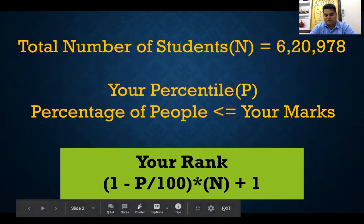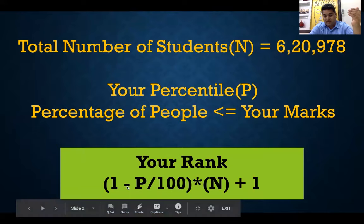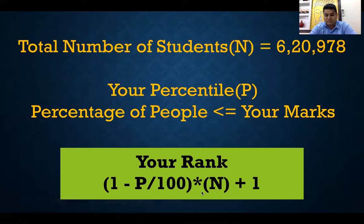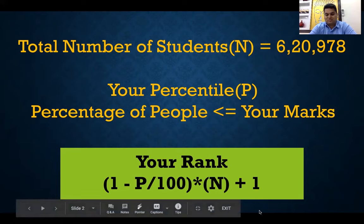What we're doing is calculating the percentage of people above you, then multiplying that by the total number of students, and then adding one for yourself as well. That is the formula.